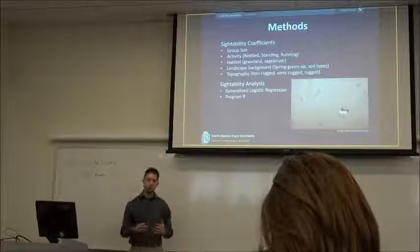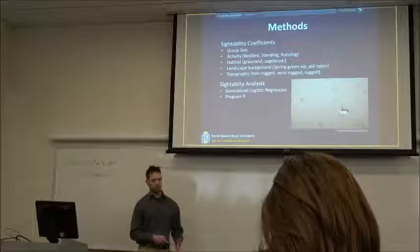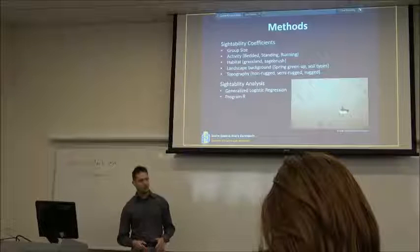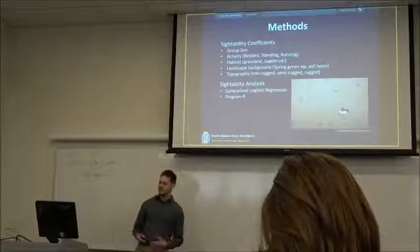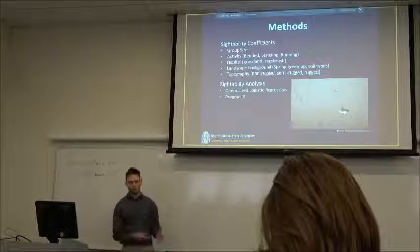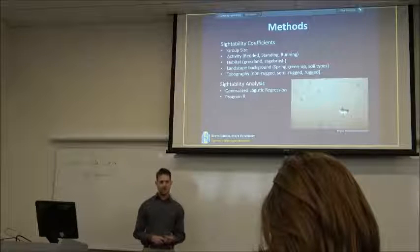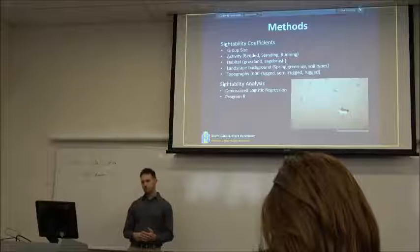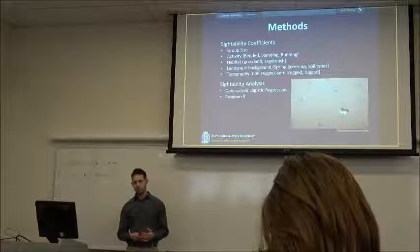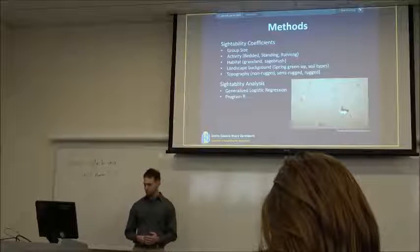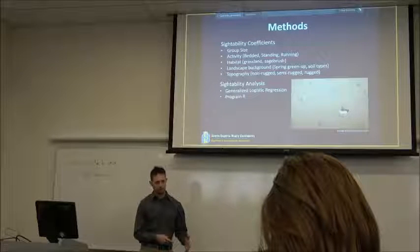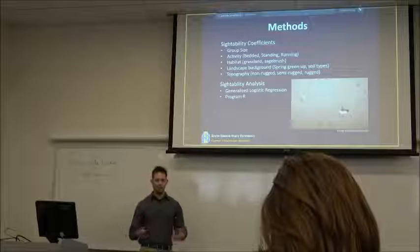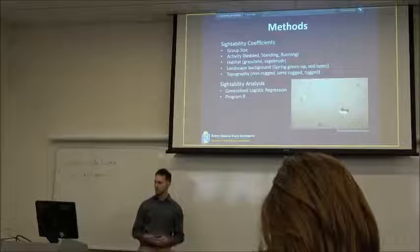Regardless if a group of pronghorn with a radio collared individual is observed or not, we're going to measure the sightability coefficients for that group at that time and the variables that we're looking at include group size which is any number of pronghorn greater than or equal to one individual in that group. In situations where there may be two collared pronghorn within that group that will still be considered as just one observation.